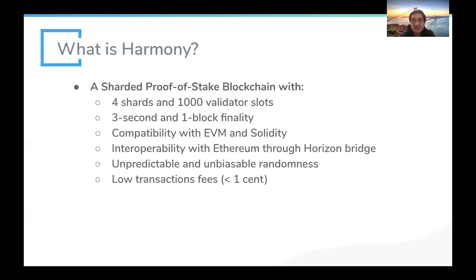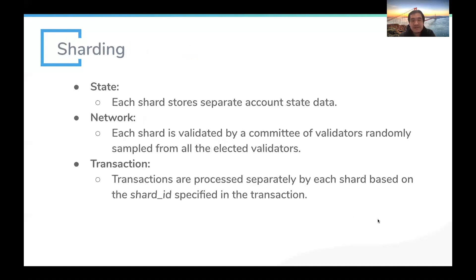Harmony is a sharded blockchain with three dimensions of sharding. First is state sharding — each shard stores a separate state database; all account data and smart contract data are separate in different shards, so they can run consensus separately. The network is also sharded: each shard has a separate set of validators that runs consensus and produces new blocks in parallel.